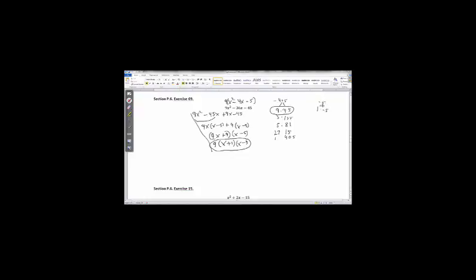Now there's an easier way to do this problem. Because I had a common factor at the end here, that indicates there was a common factor at the beginning and indeed there was. That 9 was in every term in the beginning of the problem. So you really should start off the problem by doing this. 9 times x squared minus 4x minus 5.